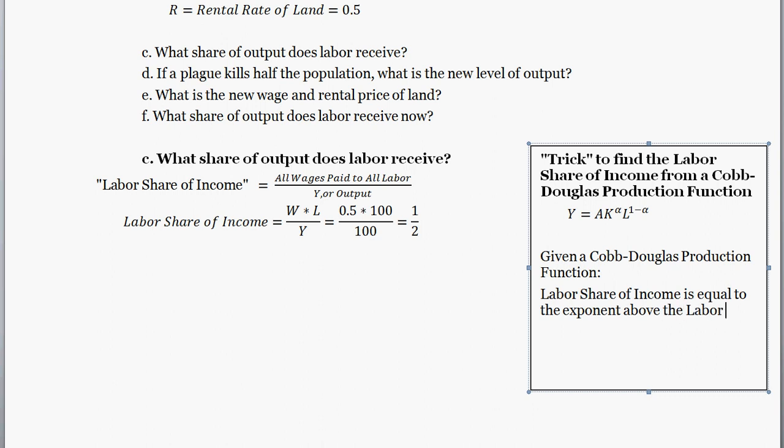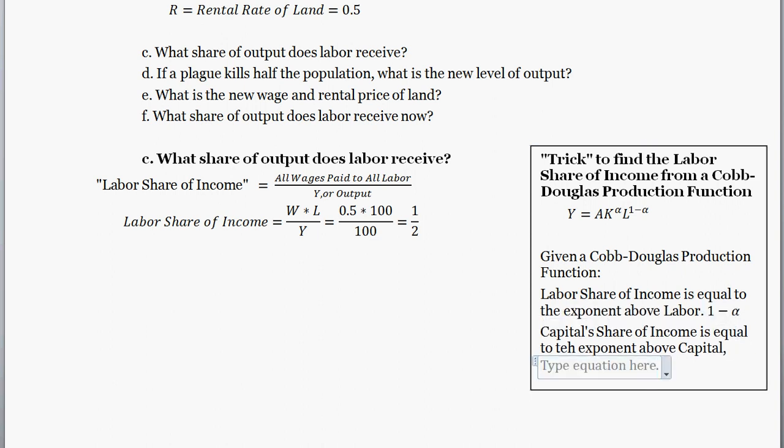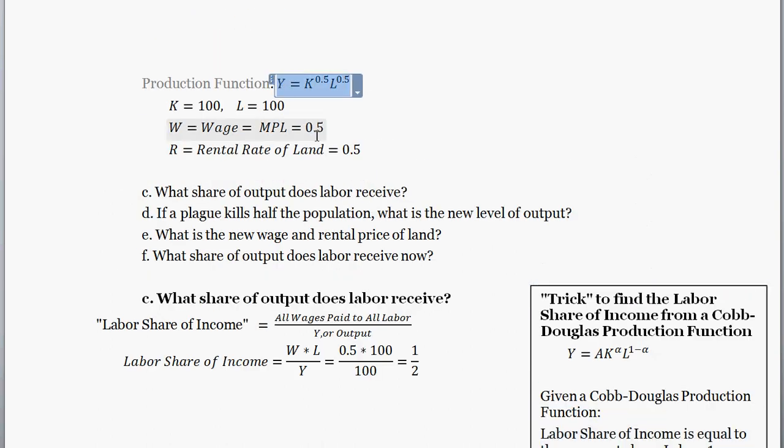And let's base the Cobb-Douglas. Cool. So it's as simple as this. And so I could have actually just looked at this production function. I see that it's a Cobb-Douglas, because when you add up these two exponents, they sum to 1, so Cobb-Douglas. And I see that there's a one-half above K, so I know capital share of income.